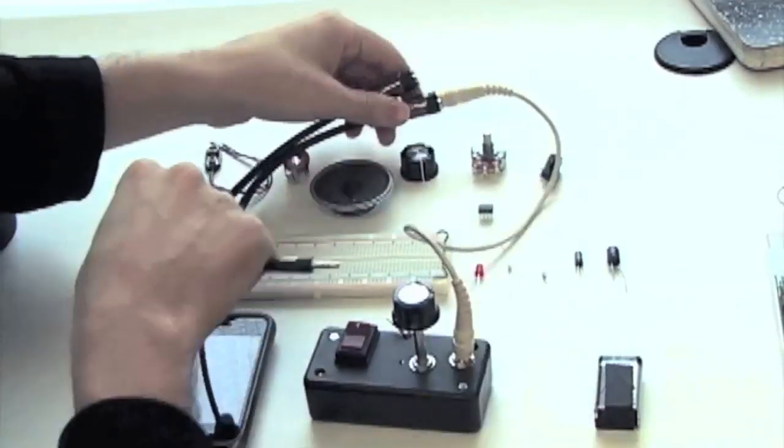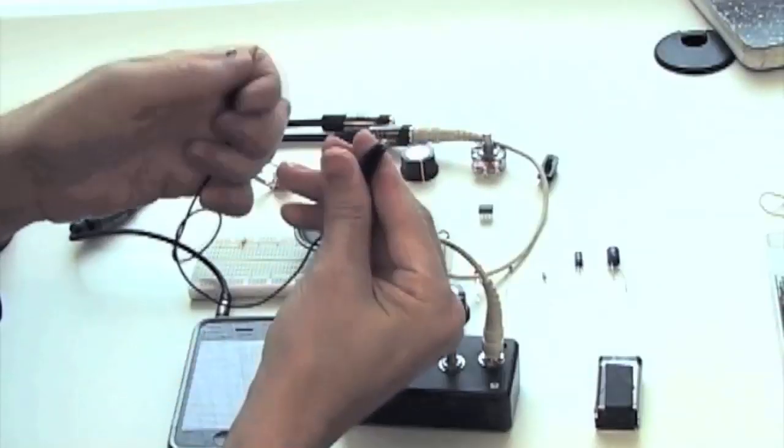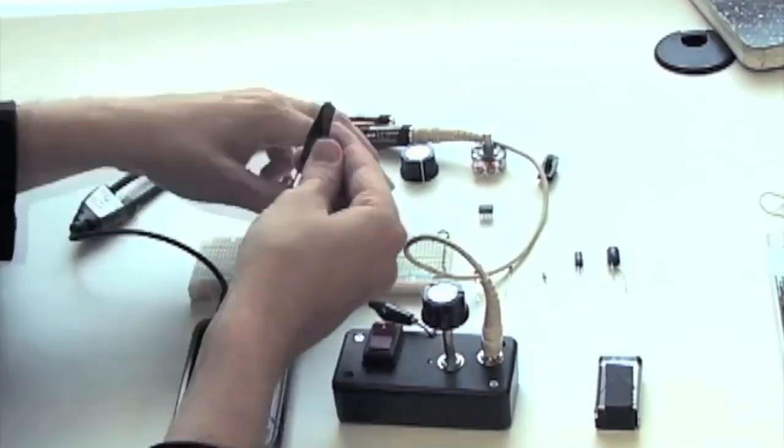We're using an 1/8-inch stereo to 1/4-inch mono adapter to connect an iPhone to our amplifier. We can then use alligator clips to connect our amplifier to our speaker.